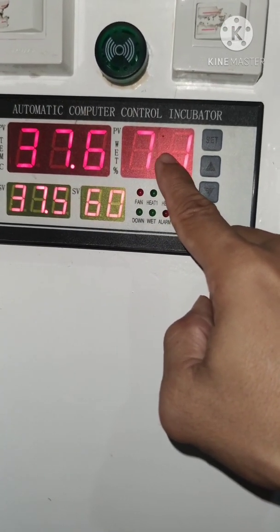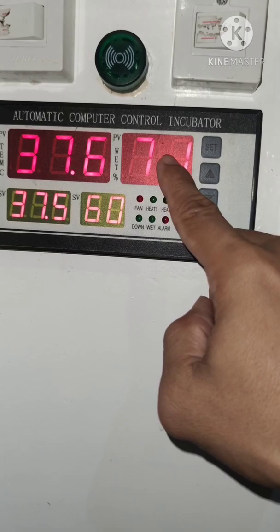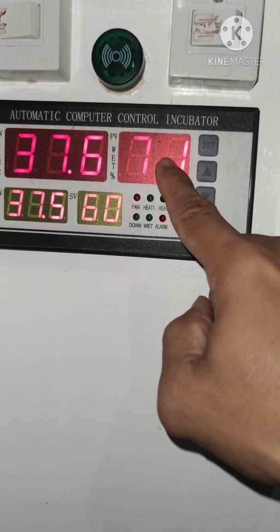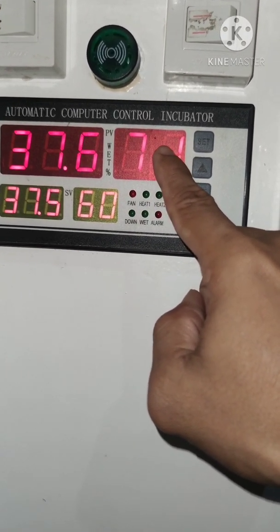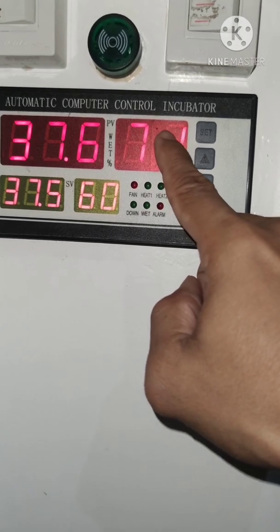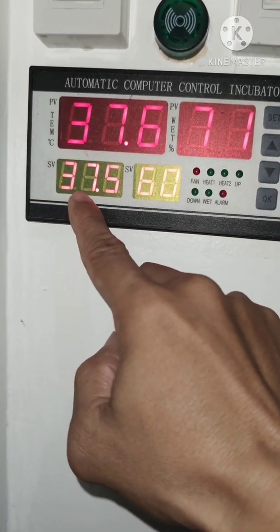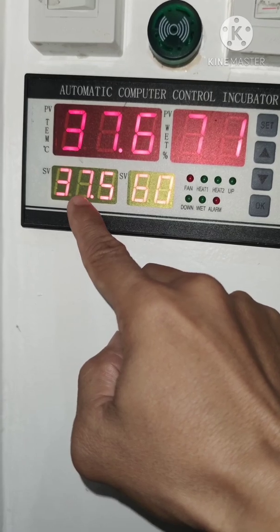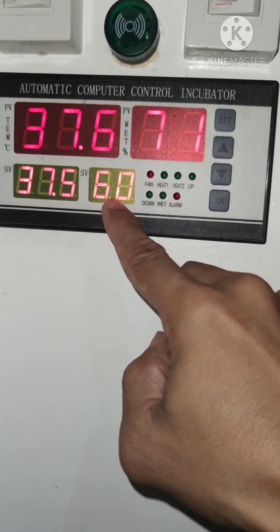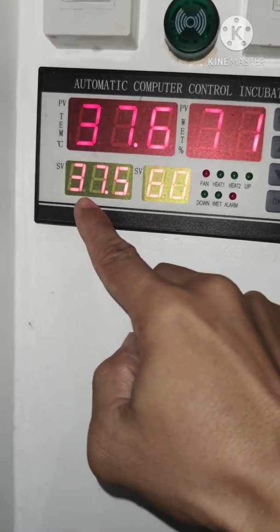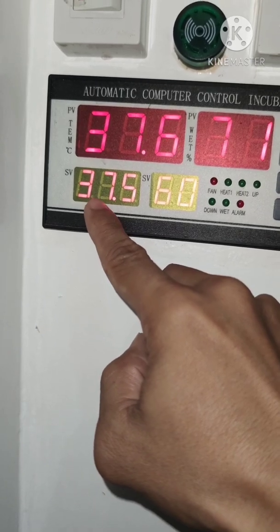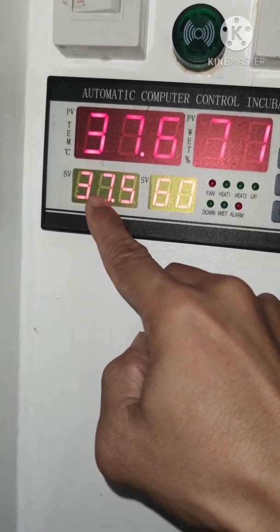The second here is the actual humidity value or actual humidity numerical value for our incubator. Now, this is the desired temperature and then this is the desired humidity. If you want to change the desired value of our incubator temperature,